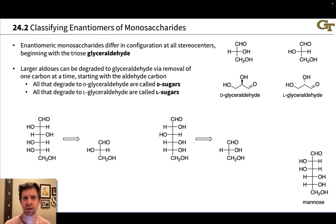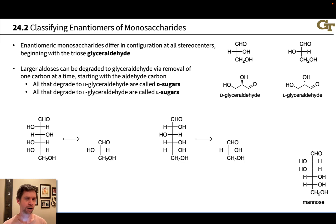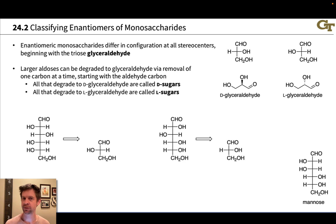We're going to begin this video by looking at important stereochemical designators for the monosaccharides. Sugars generally contain a large number of stereocenters, and so they can have rather complex stereoisomeric relationships. We're going to focus first on the differences between enantiomeric sugars in the way they're named and how we can recognize that they are enantiomers, and think about naming the two different types of sugars.